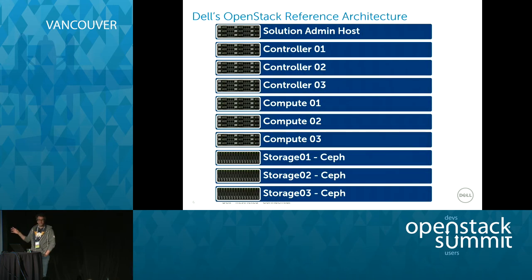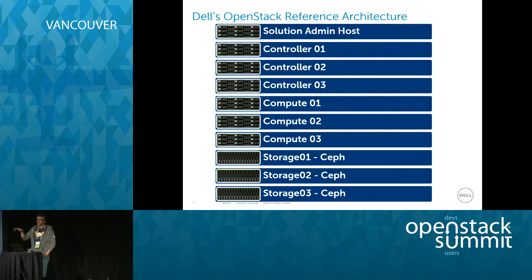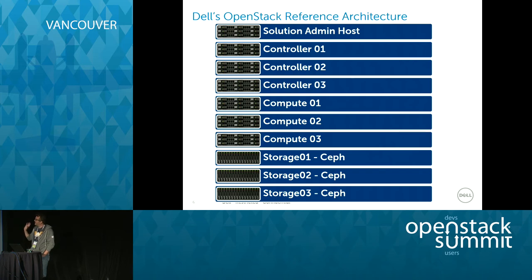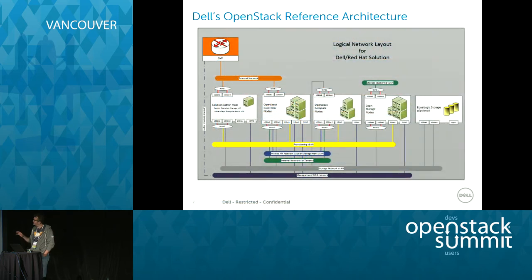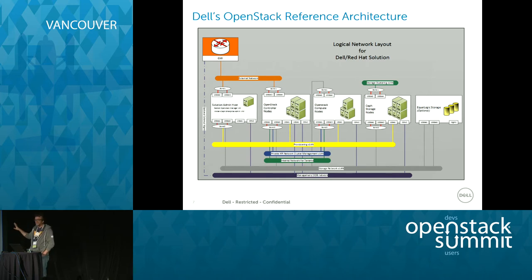This is what the rack typically looks like. Our solution admin host is where everything else gets kicked off — where all of OpenStack gets deployed from — and that's one 630. It also houses Foreman, which if you know Red Hat's OSP offering is an essential part of deploying this, driving the Puppet modules that deploy OpenStack. Three controller nodes, three compute nodes, and three storage nodes.